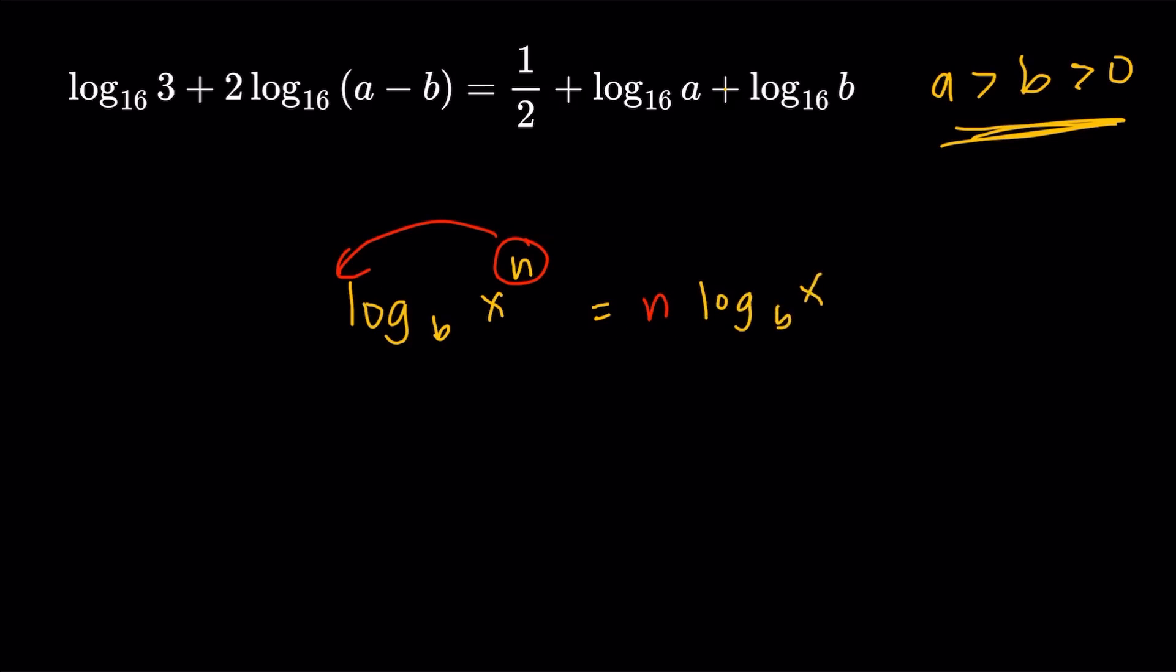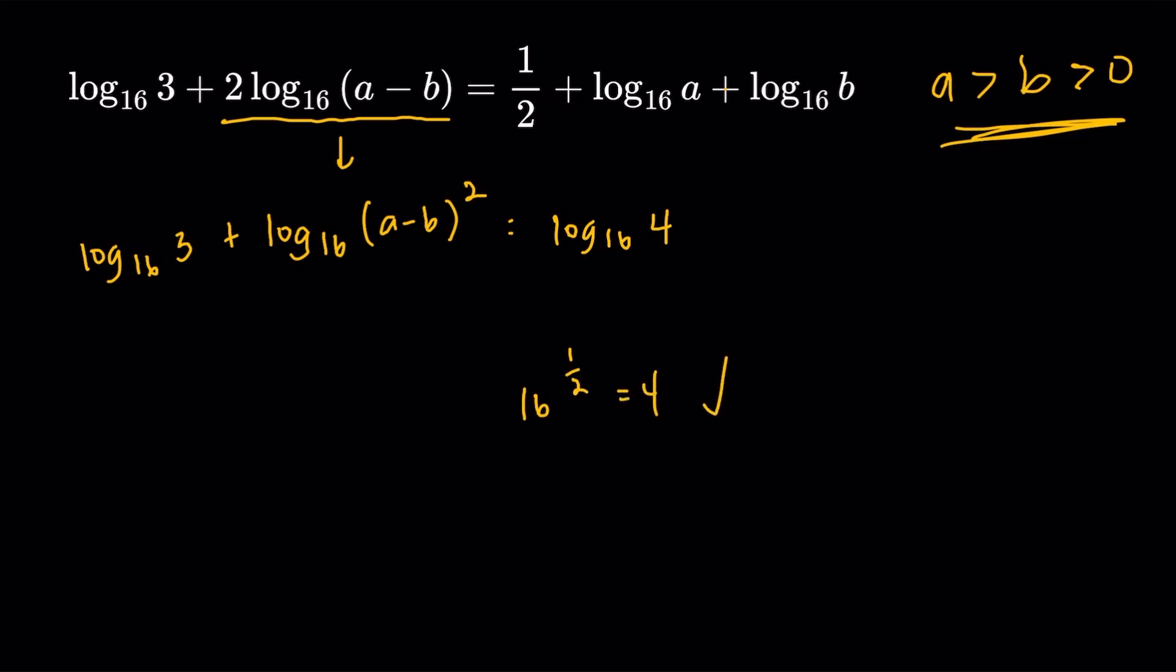So we can do that in this term over here, the one with the 2 in the front. So this part will become logarithm with base 16 of the square of a minus b. I'm just going to copy the log 3 with base 16 here. And then the 1 half. Now, take a look. We're doing everything under log with base 16. So log with base 16 of something is 1 half. It must be 4 because we know that 16 raised to 1 half, that's equal to 4. And then I'll just copy log a and log b with base 16 over here.